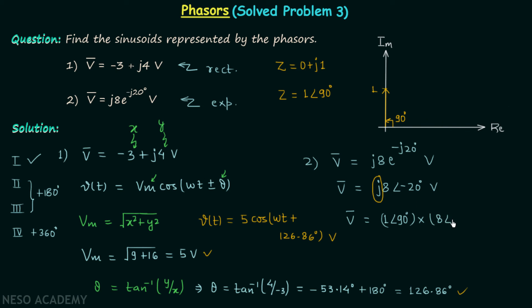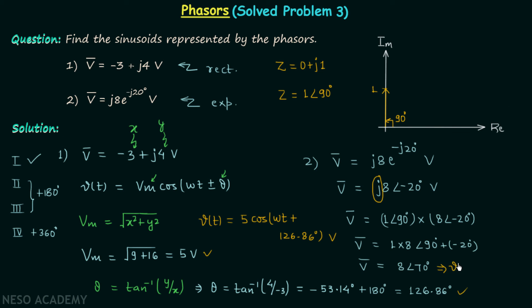Multiplying the magnitudes: 1 × 8 = 8, and adding the angles: 90° + (-20°) = 70°. So we have V = 8∠70°. Therefore, the corresponding sinusoid is v(t) = 8 cos(ωt + 70°). This is the answer for the second phasor.